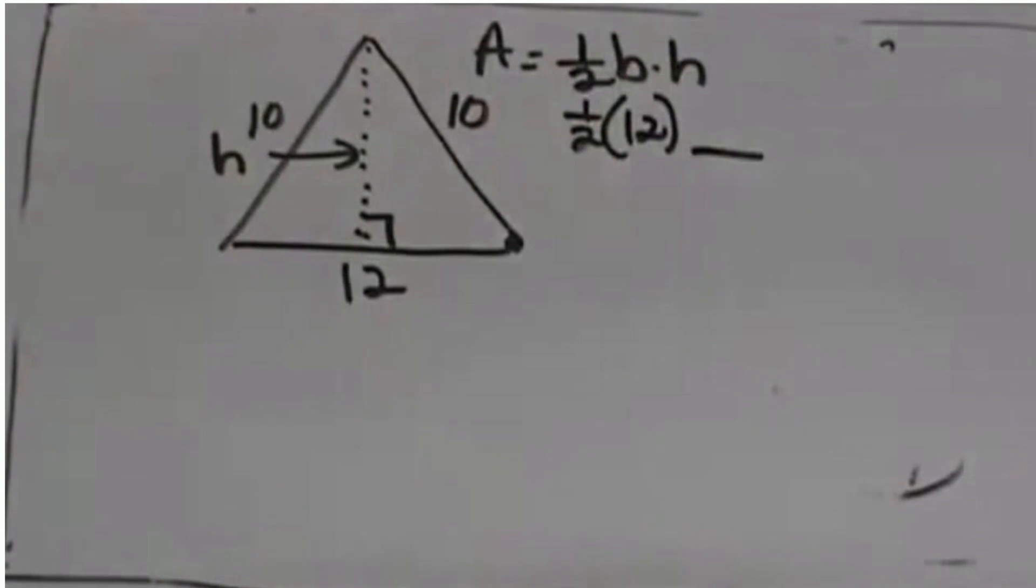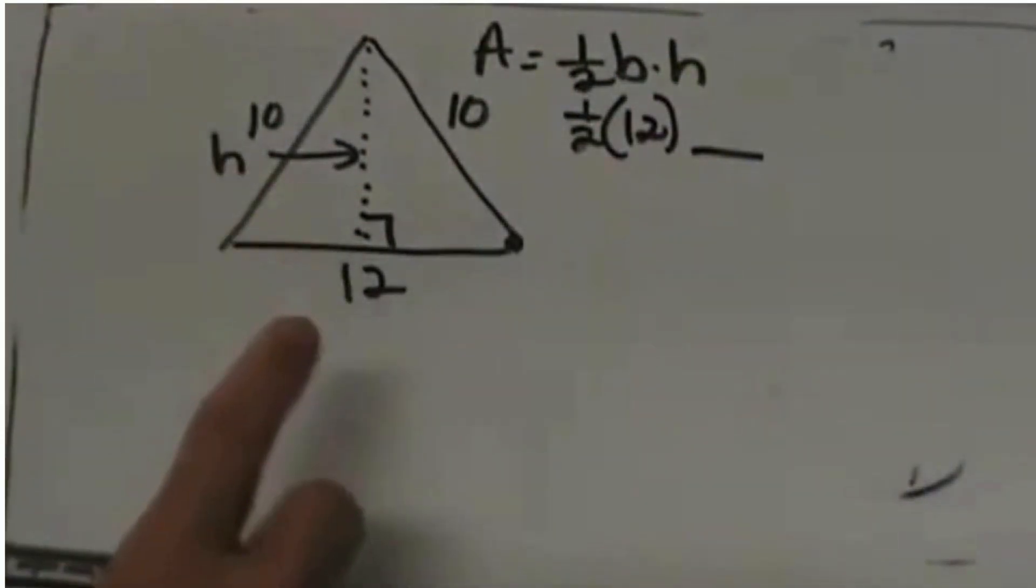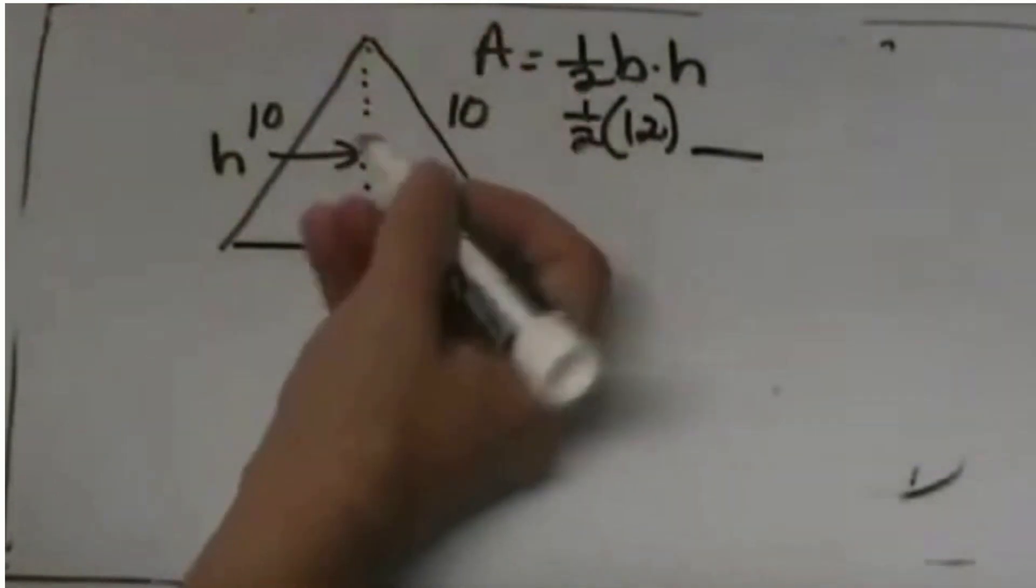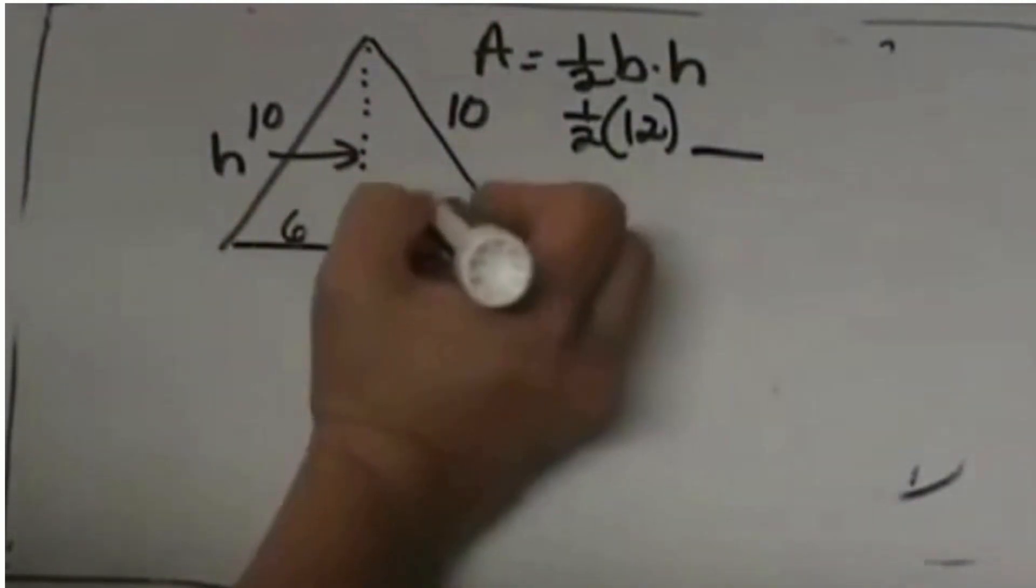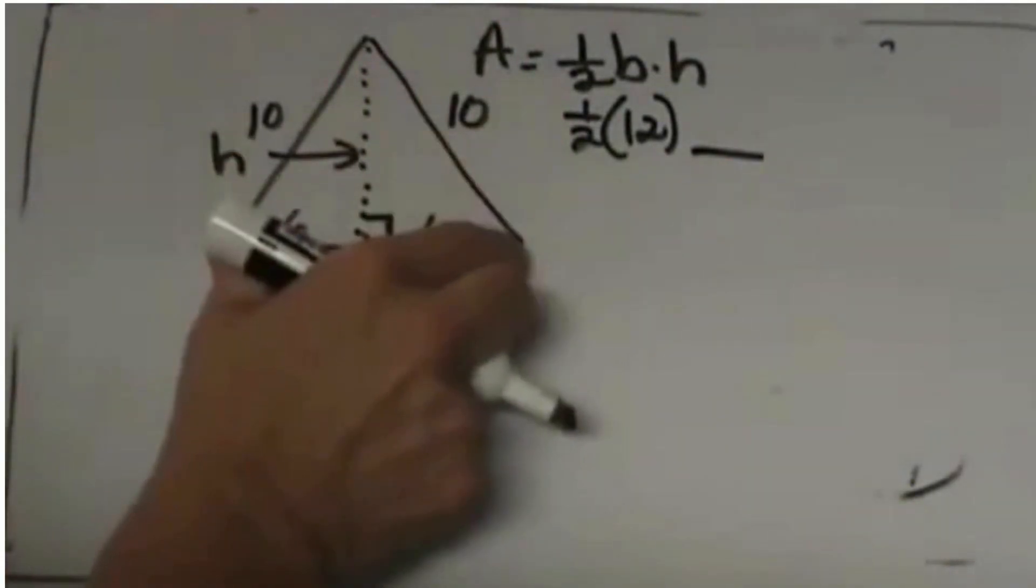We don't know our height right now but we do know something. We have an isosceles triangle. When we drop that altitude down it splits this 12 into two parts of 6. So that is 6 and that is 6 to make a base of 12.